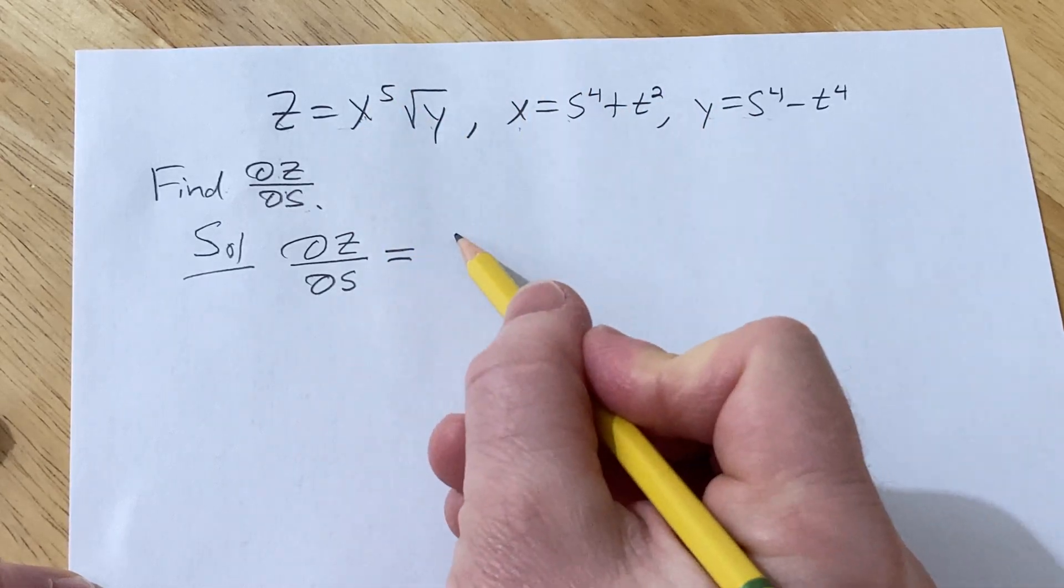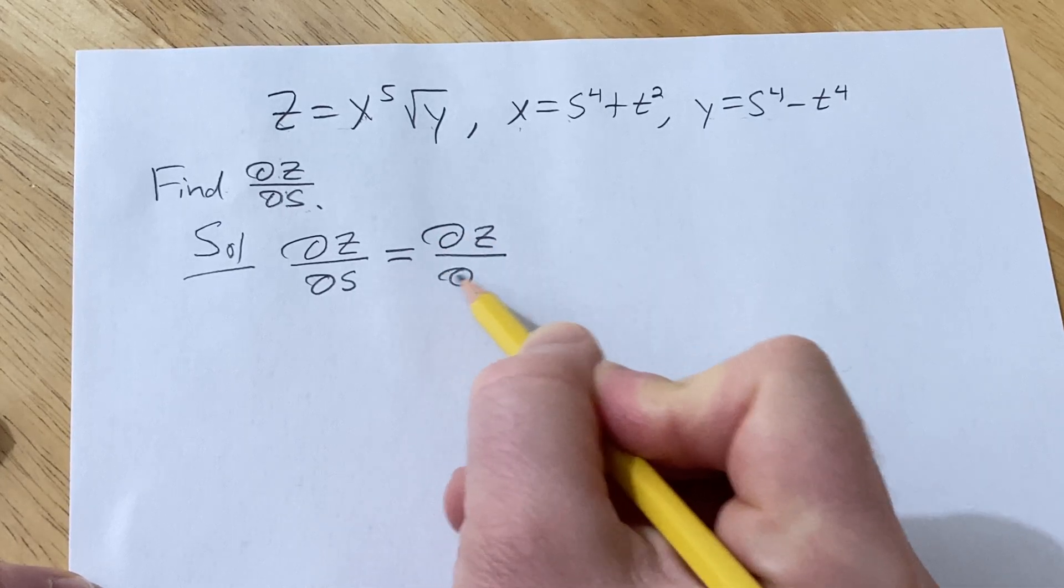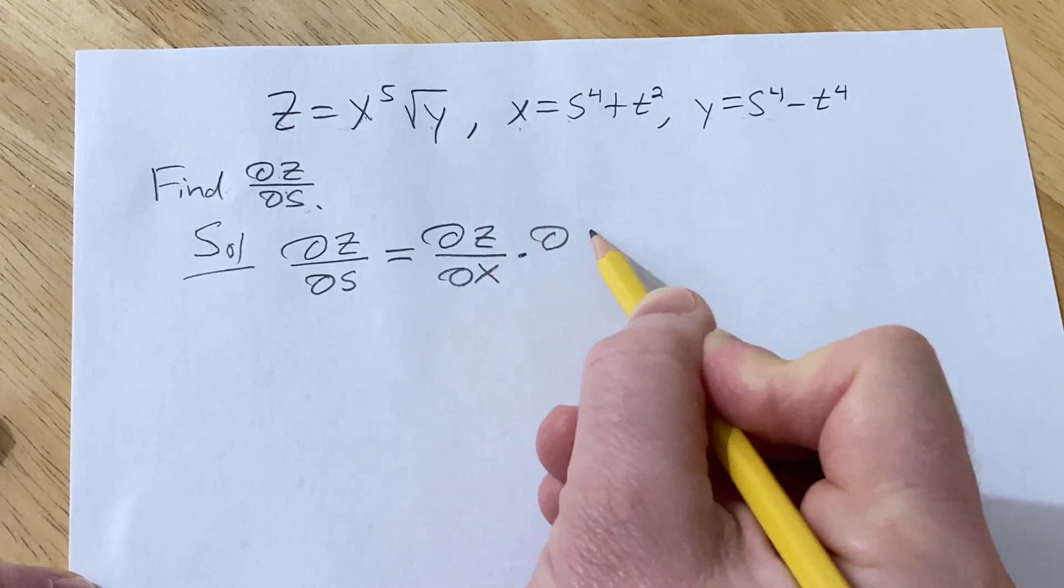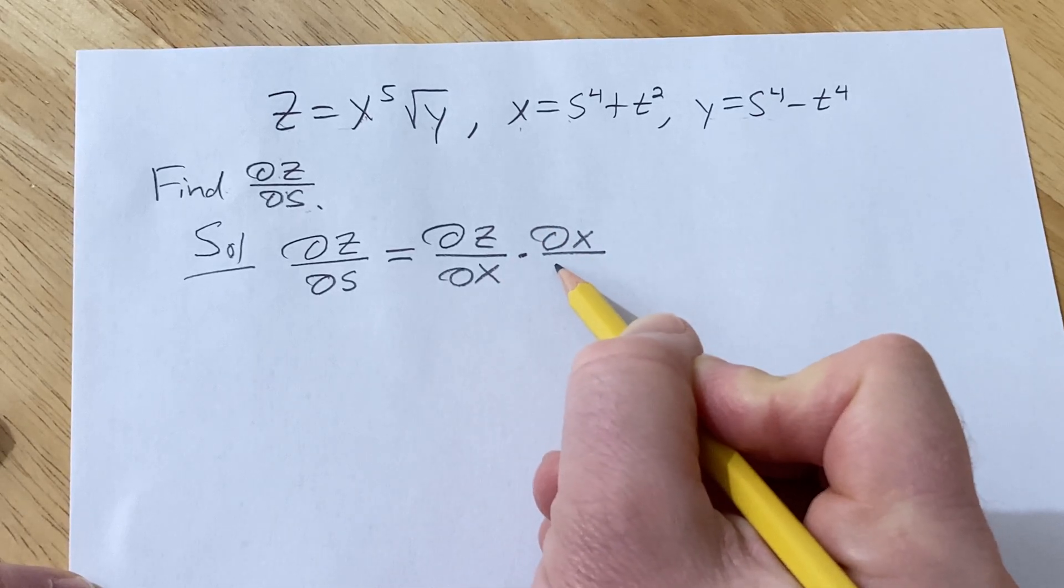So if we go through x we'll take the partial of z with respect to x times the derivative of the inside function, so the partial of x with respect to s.